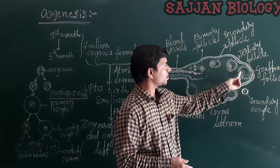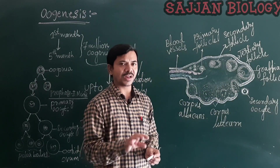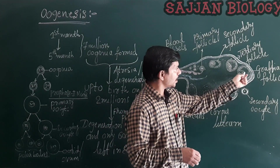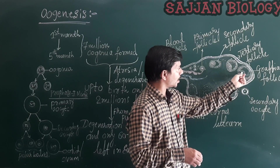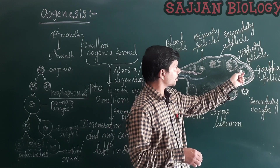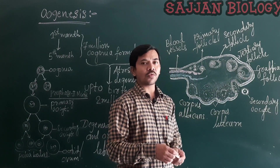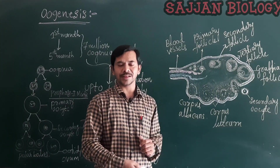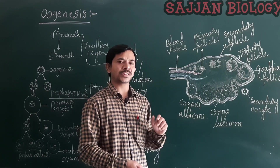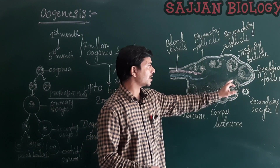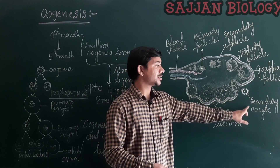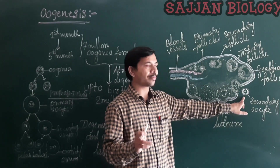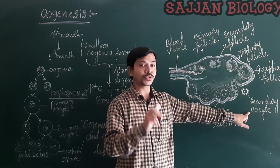The secondary oocyte is surrounded by a layer of granulosa cells. Around the secondary oocyte, a layer called the zona pellucida is formed. The Graafian follicle then ruptures and releases the secondary oocyte. Please note this very important point: it is not releasing an egg or ovum — it releases the secondary oocyte.